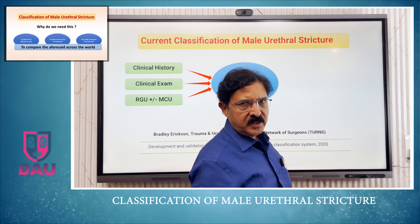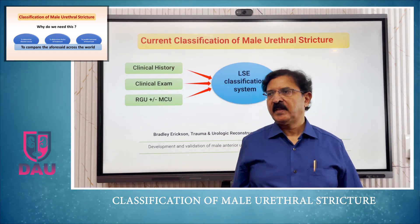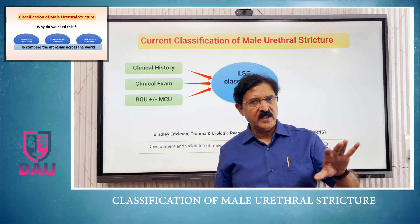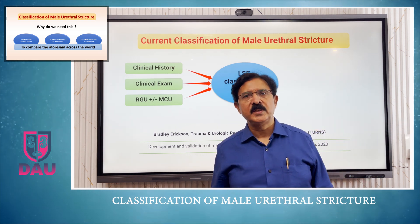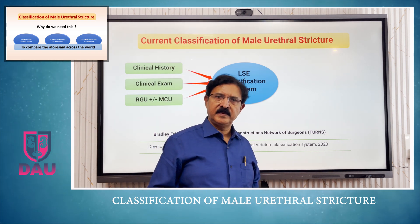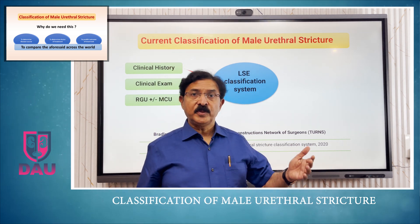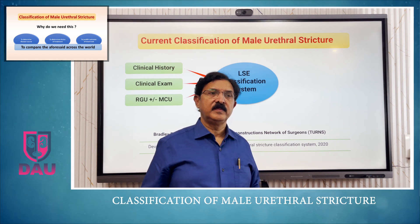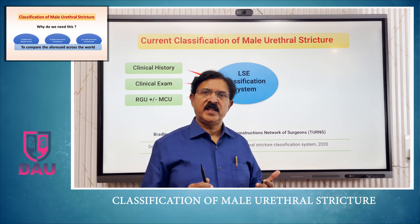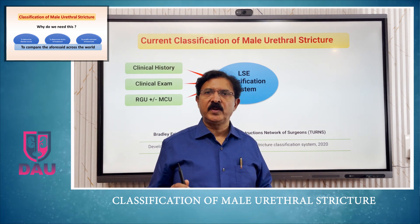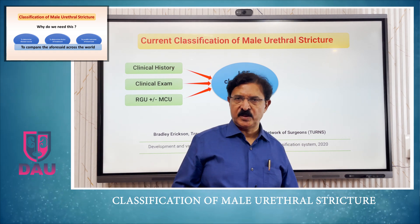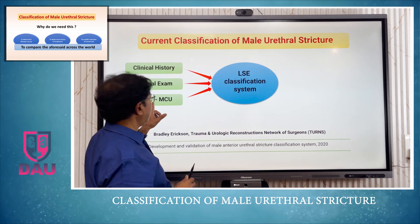For strictures which are passable — meaning contrast instilled from the external urinary meatus passes through the stricture and reaches the proximal normal urethra — a retrograde urethrogram alone is sufficient. However, if information about the urethra proximal to the stricture is not available on retrograde urethrogram, a micturating or voiding cystourethrogram is required. That is why the notation includes 'plus or minus' for the voiding study.